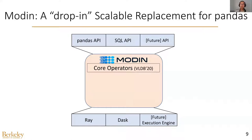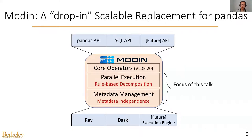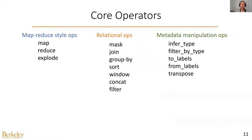The key idea of Modem is to map all of the rich functions of Pandas into 15 core operators and run the core operators efficiently in parallel. In this talk, I will focus on two techniques in Modem: rule-based decomposition and metadata independence. Let me start with the first one, which is to enable efficient parallel execution for the core operators.